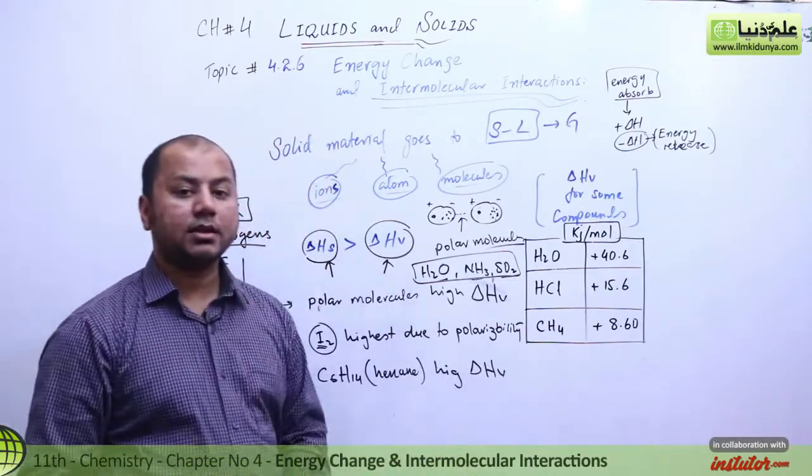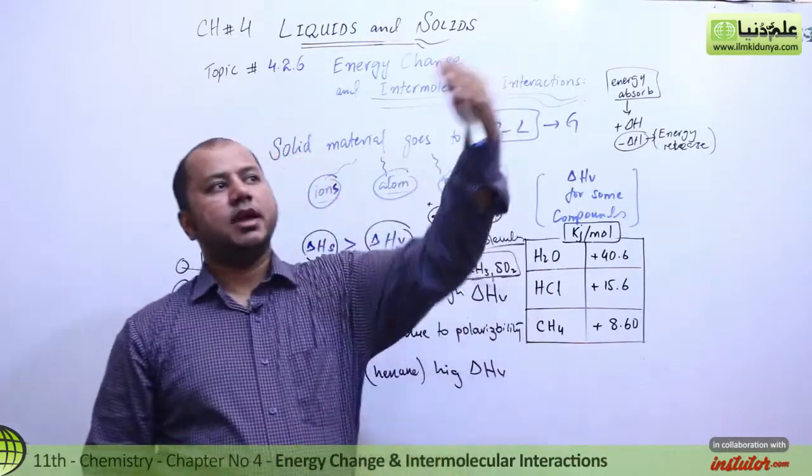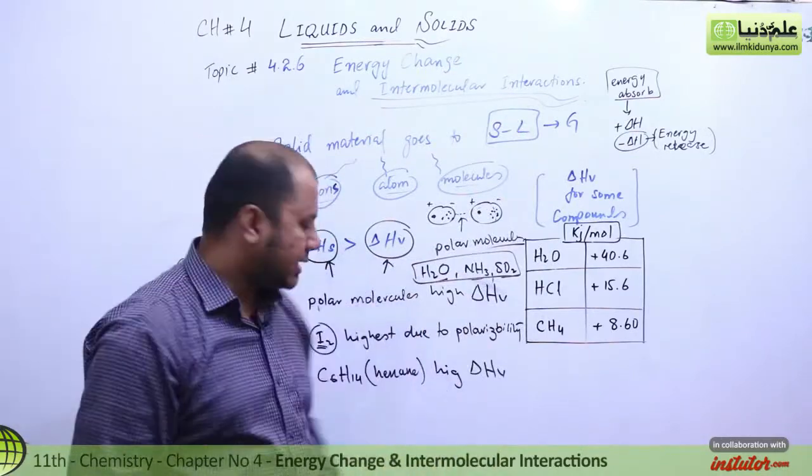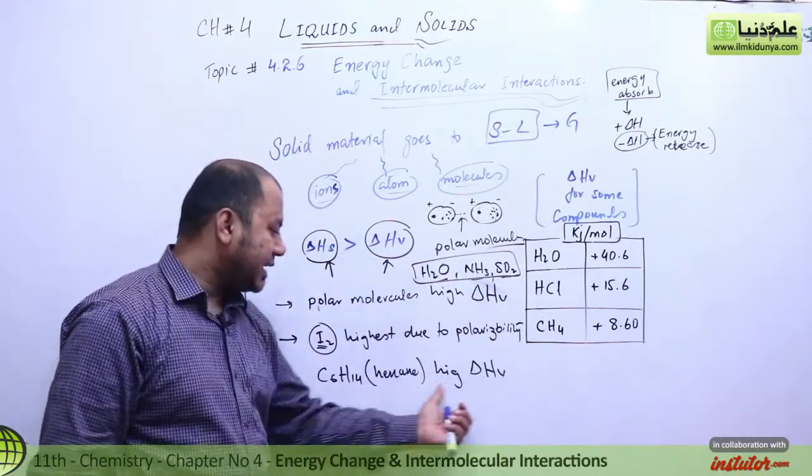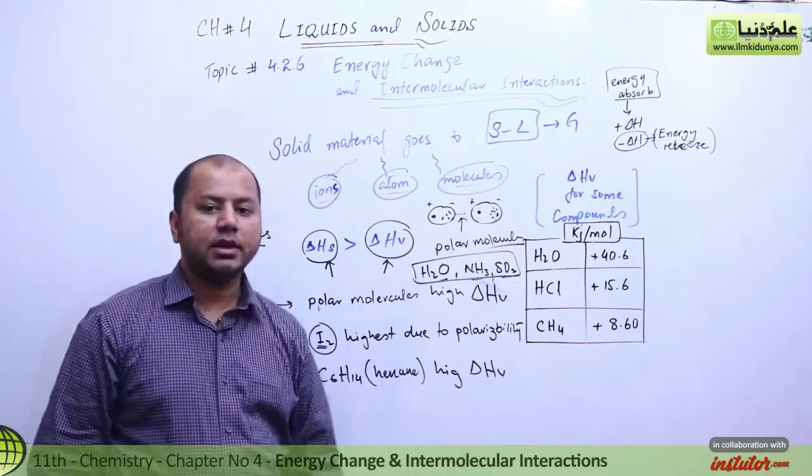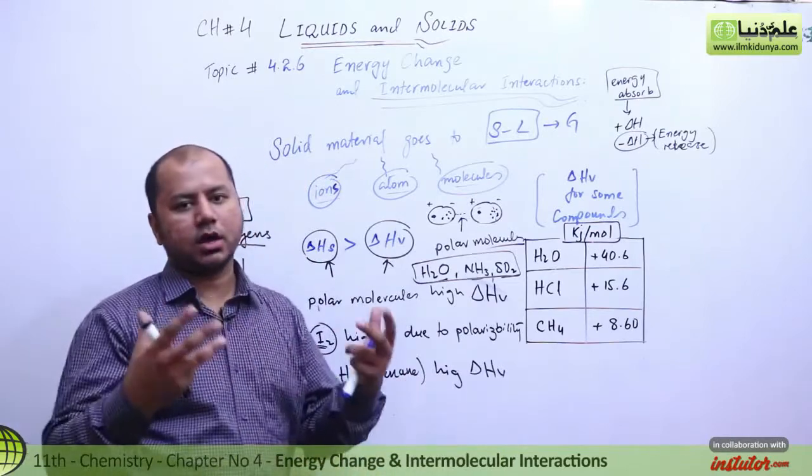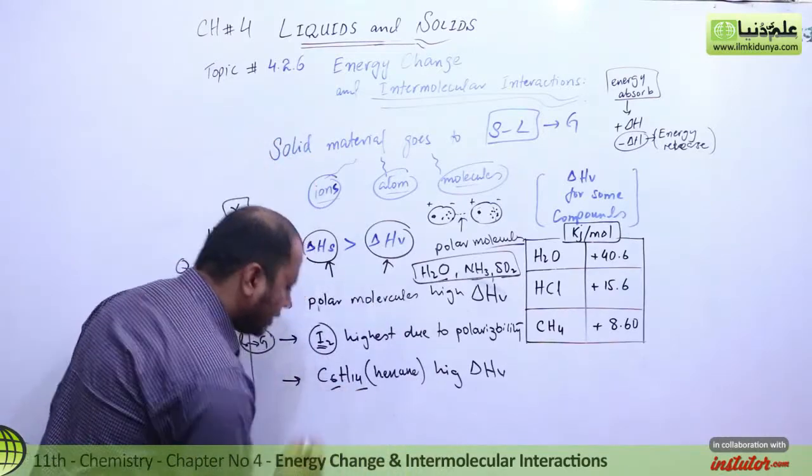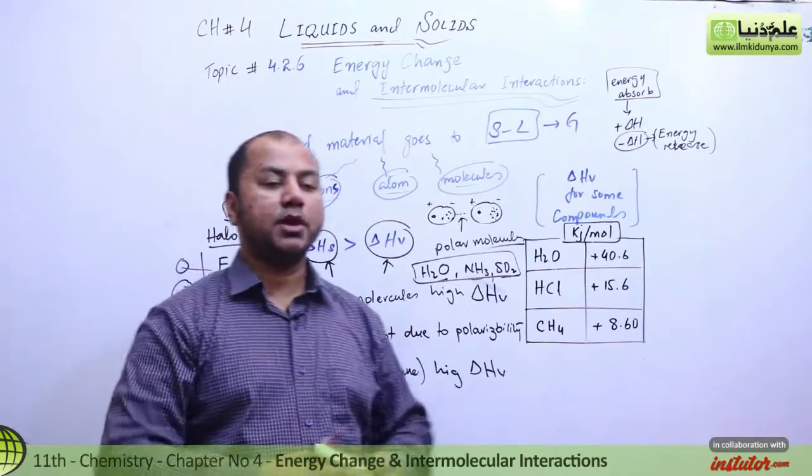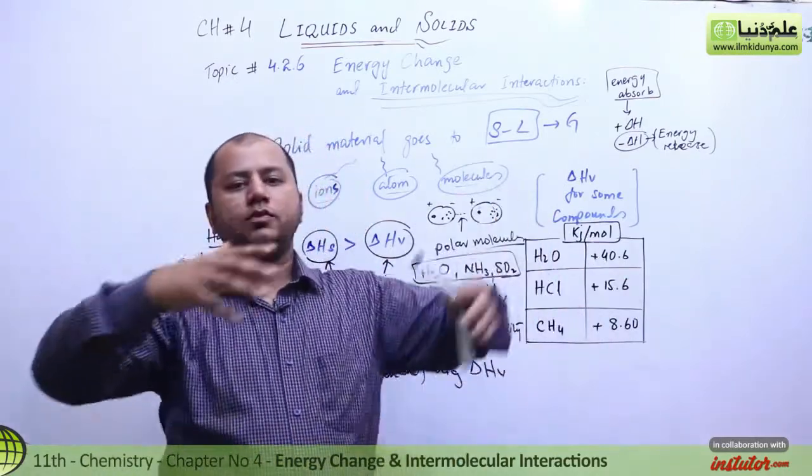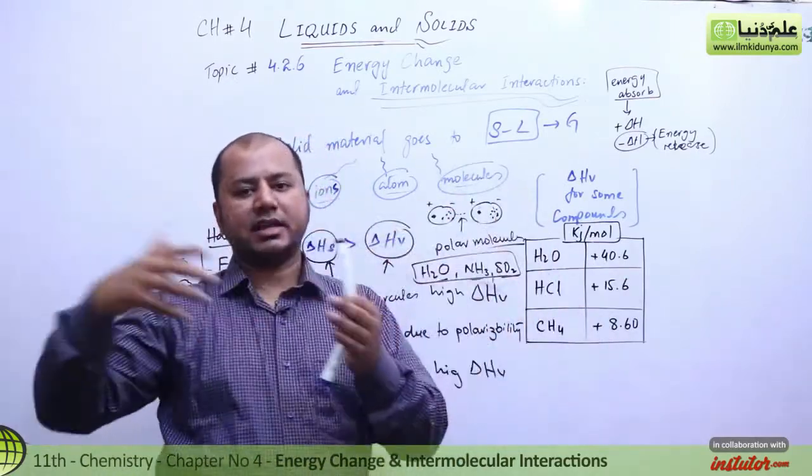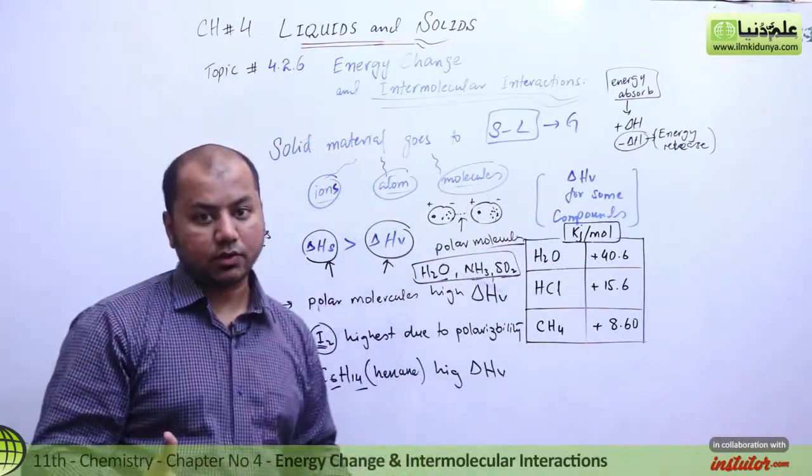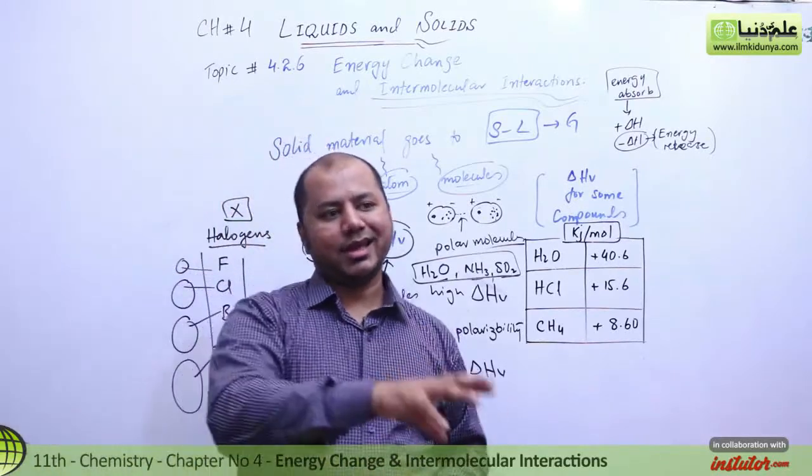The larger the atom, the more electrons there are, and the more polarizability phenomenon you'll see. If we talk about halogens, iodine has the highest molar heat of vaporization due to polarizability. For organic molecules - methane, ethane, propane, butane, pentane, and hexane - hexane has the most polarizability because it has the largest molecule, with 6 carbons and 14 hydrogen atoms. They make a big cluster of electrons.